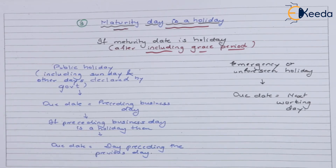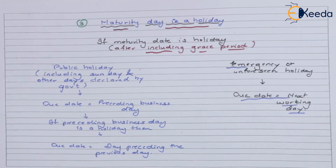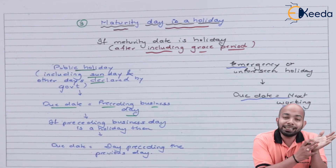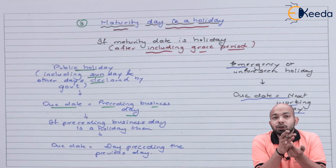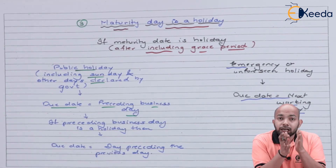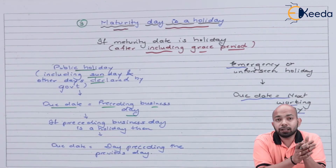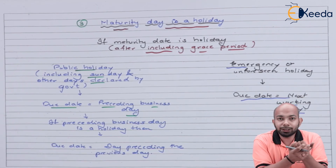If the maturity date falls on an emergency holiday, the due date will be the next working day. In case of an emergency or unforeseen holiday, the next working day is taken as the due date. However, if the maturity date after adding the grace period comes to a declared public holiday like Dussehra or Diwali, the due date will be the preceding working day — for example, if 25th December is Christmas, the due date becomes 24th December.